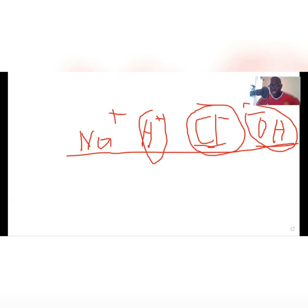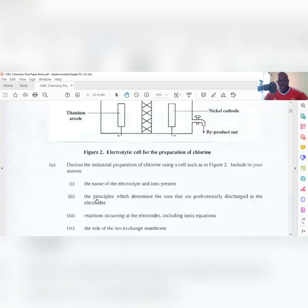To recap: to determine what discharges, consider (1) whether the electrolyte is aqueous or molten, (2) whether it is concentrated or dilute — the anion in greater quantity discharges at the anode — and (3) for cations, the position of the element in the electrochemical series determines which cation discharges.